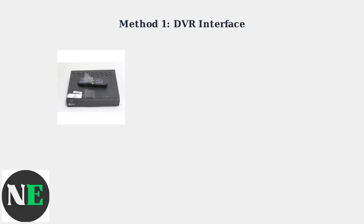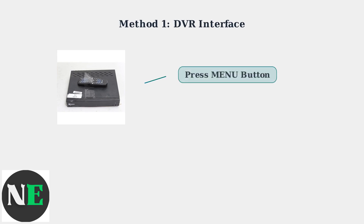There are three primary methods to delete videos on your SWAN DVR system. The first and most common method is using the DVR interface directly. Start by pressing the menu button on your DVR unit or remote control, which will bring up the main menu interface on your screen.